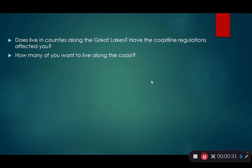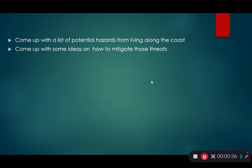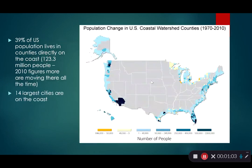The activity for this lecture is to come up with a list of potential hazards from living along the coast and some ideas on how to mitigate those threats — for example, hurricanes require good evacuation policies. What are the hazards from living on the coast and what do we do about them? Post your answers in Canvas.